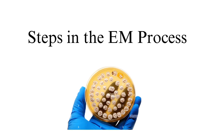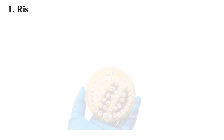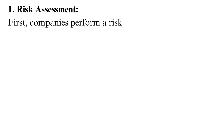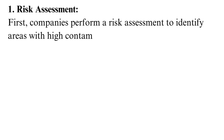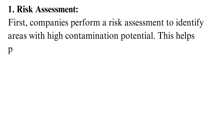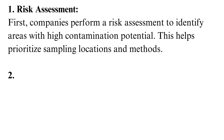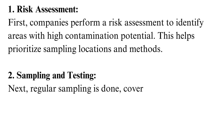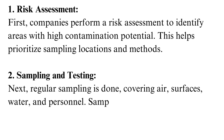Steps in the EM process: first, companies perform a risk assessment to identify areas with high contamination potential. This helps prioritize sampling locations and methods. Next, regular sampling is done, covering air, surfaces, water, and personnel.